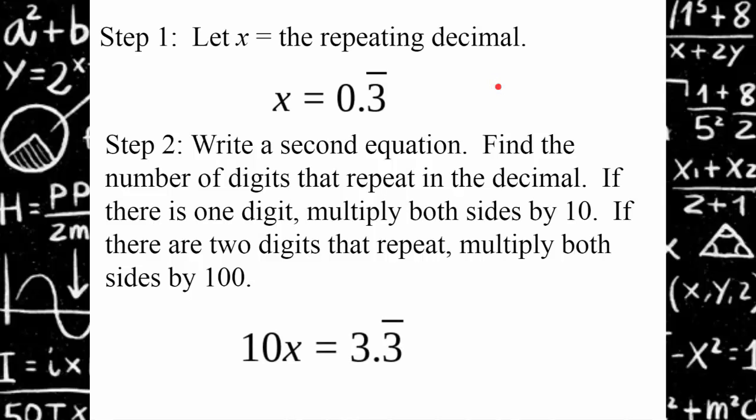So in algebra, as long as you're fair and equal to both sides of an equation, you can do anything you want. So for this magic trick, we're going to multiply both sides by 10. So x times 10 is 10x. 0.3 repeating multiplied by 10 will be 3.3 repeating. So every time you multiply by 10, you move the decimal point one space to the right.